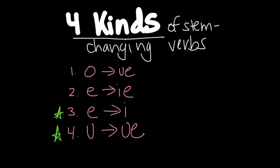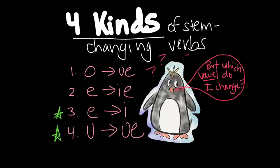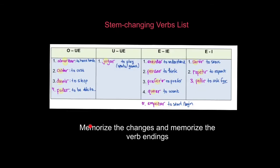The E to I and U to UE changes are the least common. Here is our stem-changing verbs list — remember to memorize the changes and the verb endings for conjugations. O to UE verbs include almorzar (to have lunch), costar (to cost), dormir (to sleep), and poder (to be able to). Jugar (to play sports or games) is our U to UE verb — notice there's only one. E to IE verbs include entender (to understand), pensar (to think), preferir (to prefer), querer (to want), and empezar (to start or begin).